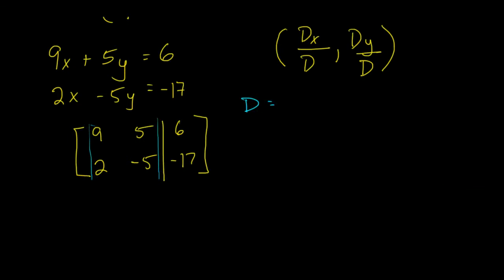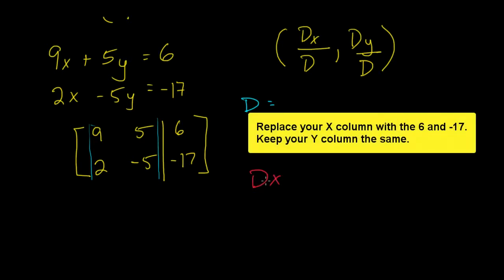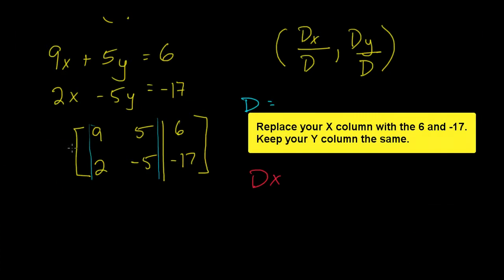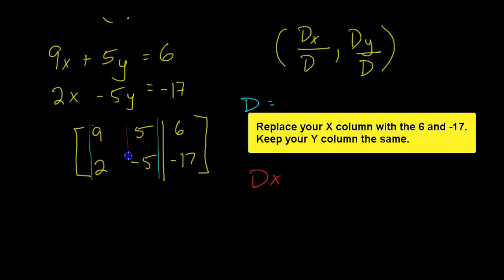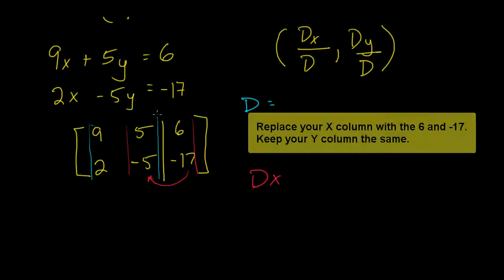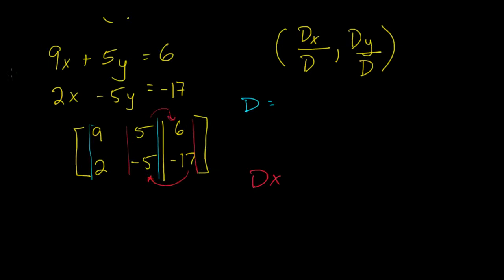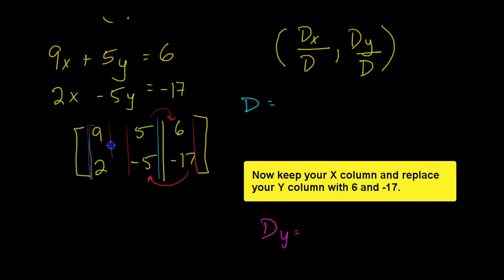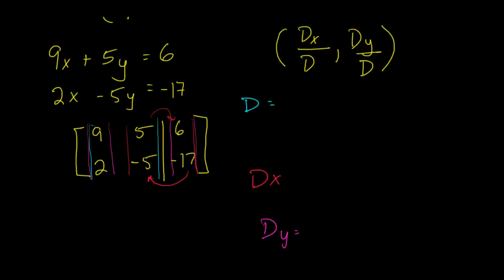Then we want to find the determinant of x, which will use these two columns, although this one needs to be switched. And then we also need to find the determinant of y, which will be this column and this column again. So let's take a look at what that means.